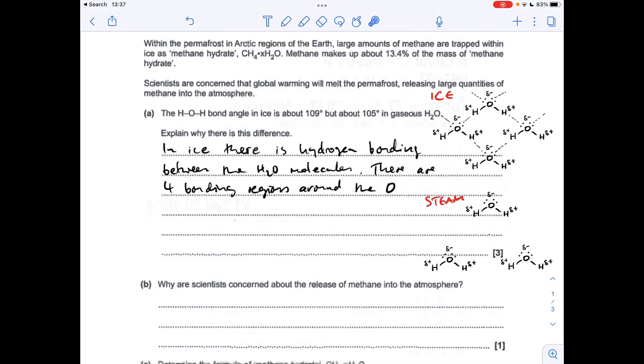Then if we move on to the steam diagram, you'll notice that I've lost the hydrogen bonds because effectively the H2O molecules have got complete freedom. So if we look at what's going on around each oxygen, we've now got two bonding regions and two lone pairs.